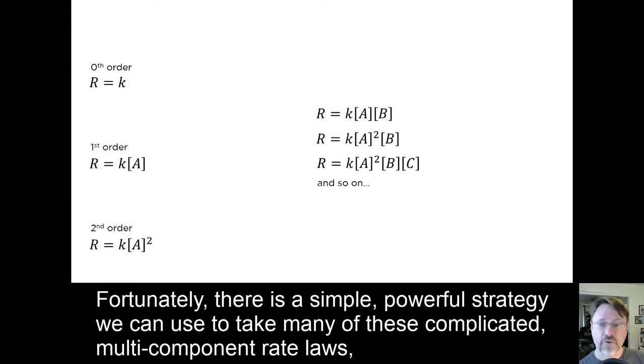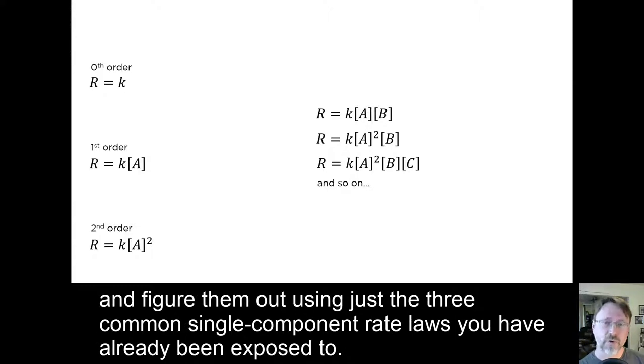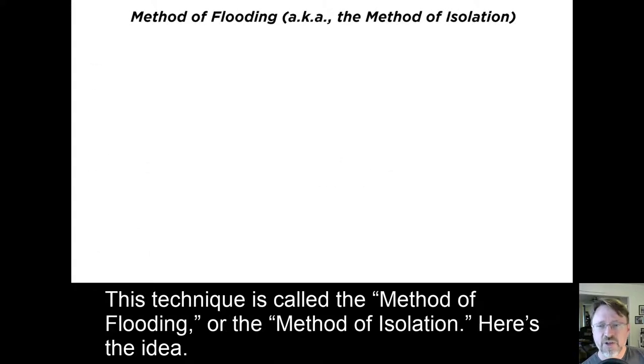Fortunately, there is a simple, powerful strategy we can use to take many of these complicated multicomponent rate laws and figure them out using just the three common single component rate laws you've already been exposed to. This technique is called the method of flooding, or the method of isolation.